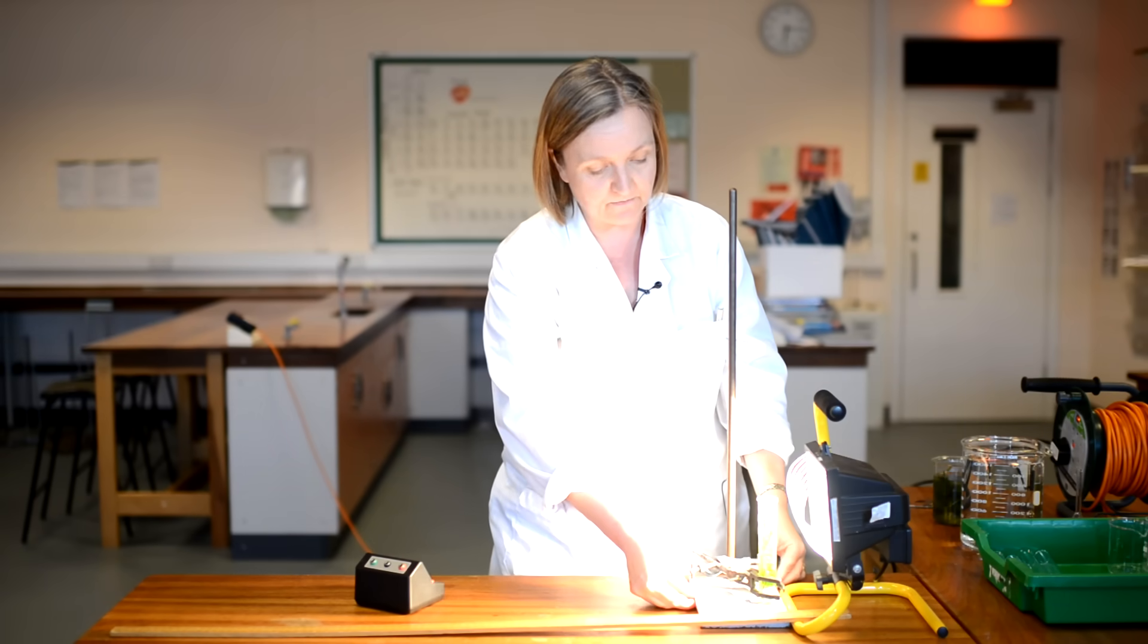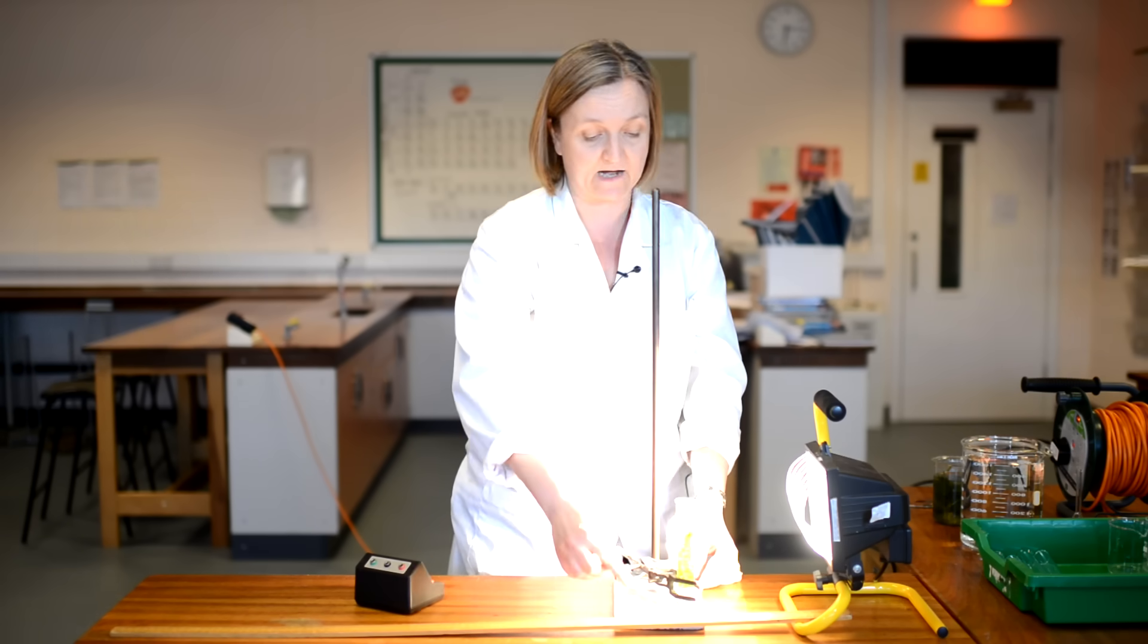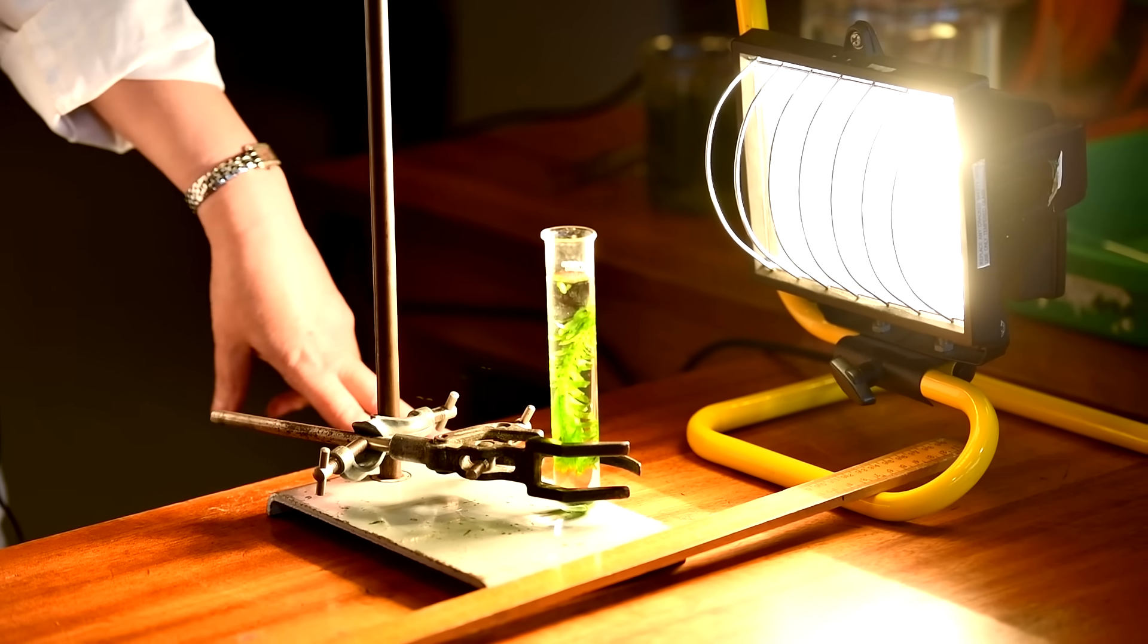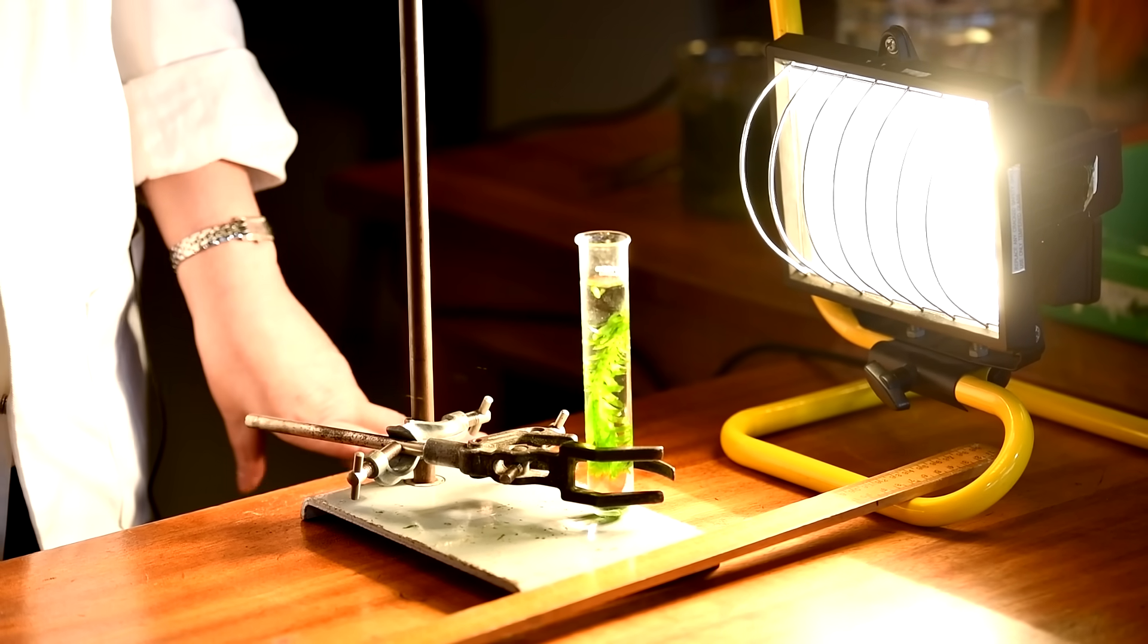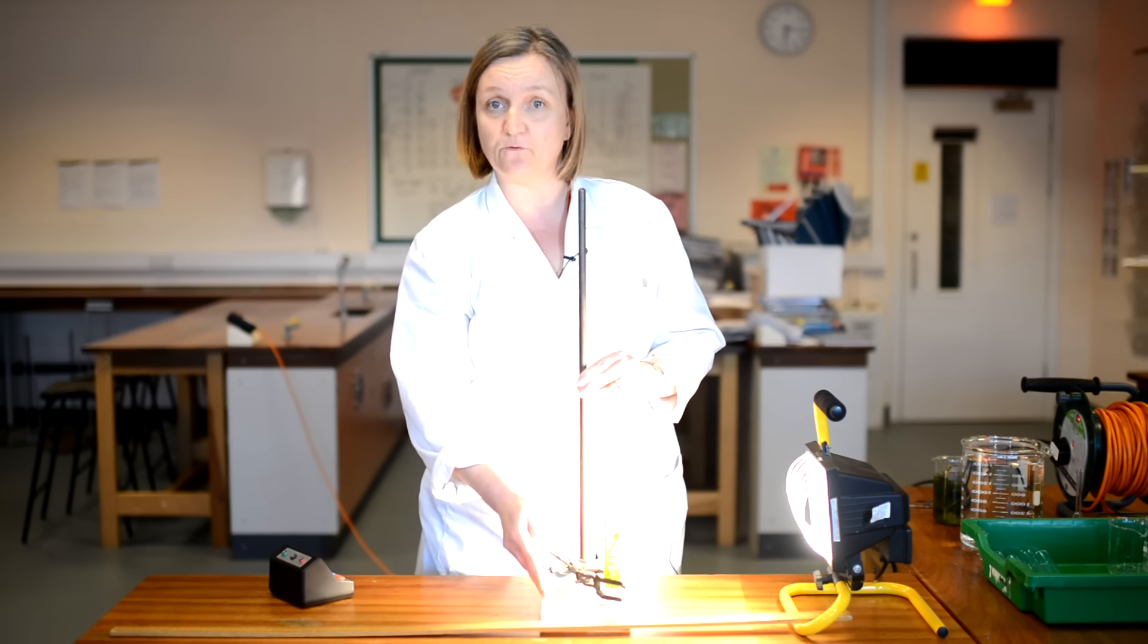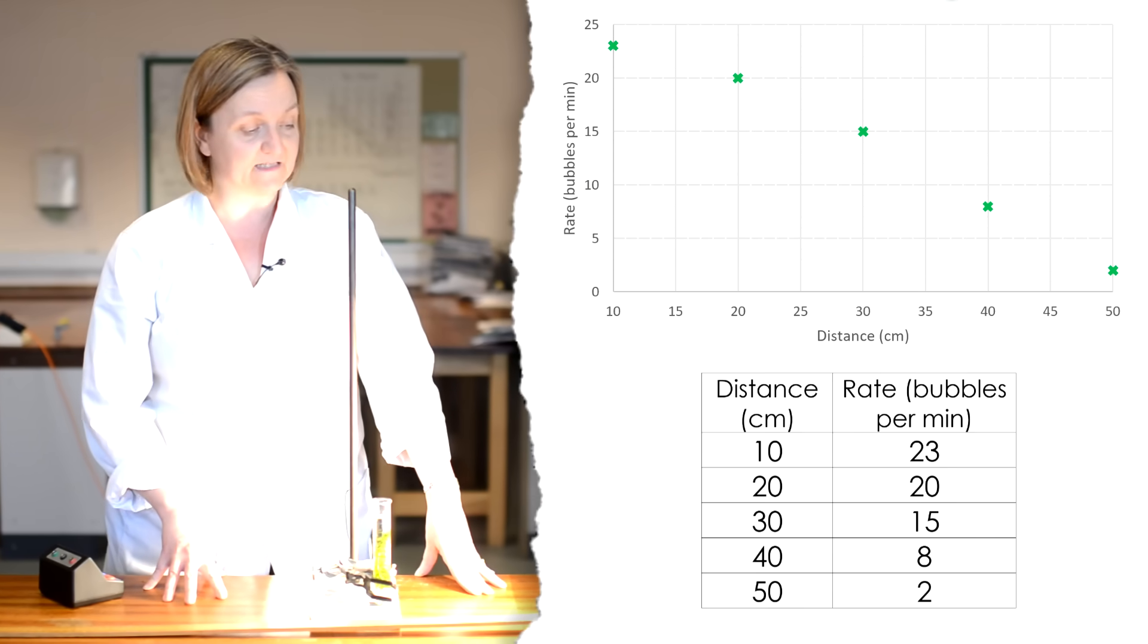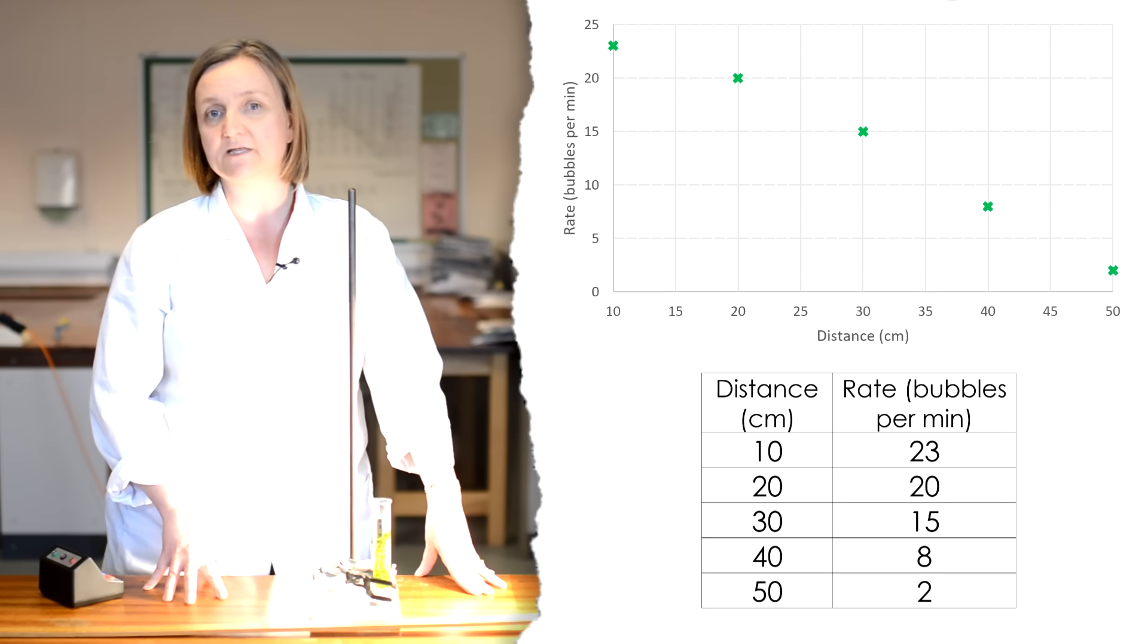So now I'm ready to change the value for our independent variable. So I'm going to move my pond weed away from my light so that it is now 20 centimetres from the light source. And again, as I did before, I'm going to leave it for a few minutes so it can adjust to the new level of light and then I will count the bubbles again. Now I need to do five values for my independent variables. So I'll repeat the experiment with the pond weed at 30, then 40 and finally 50 centimetres away from the light source. And so your results will look a little bit like this. And as you can see, as the distance between the light source and the pond weed got greater, the number of bubbles produced in a minute decreased.